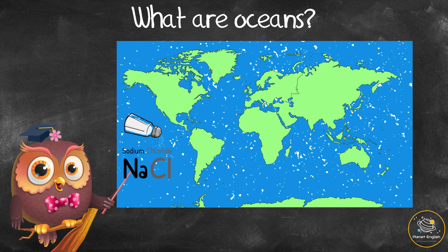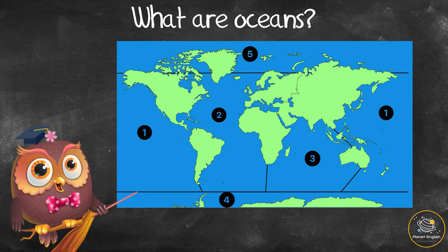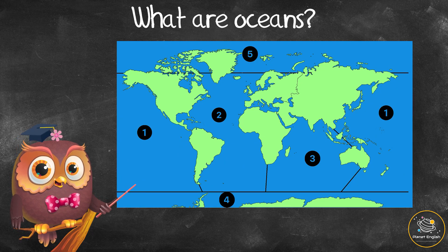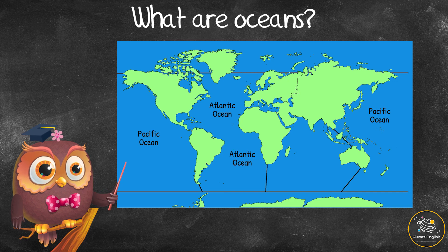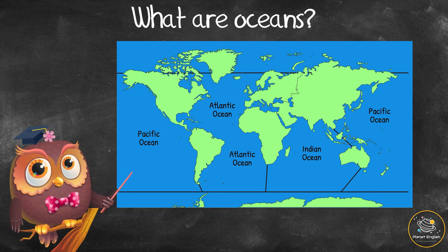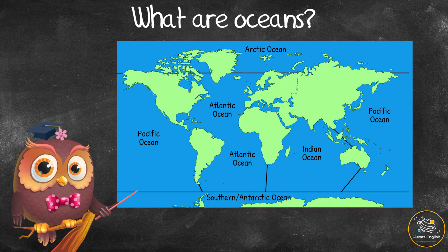There are five oceans. From largest to smallest, they are the Pacific, the Atlantic, the Indian, the Southern or Antarctic, and the Arctic.